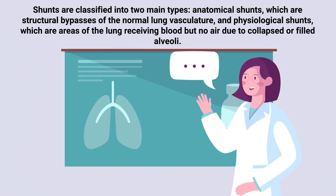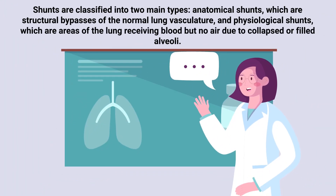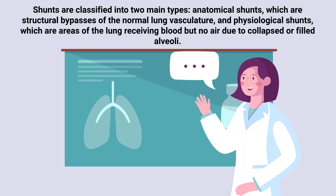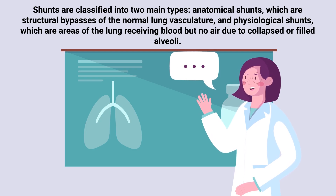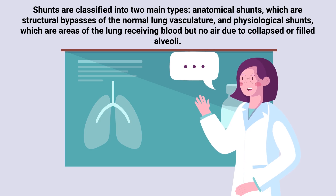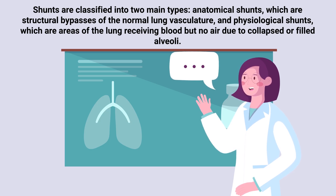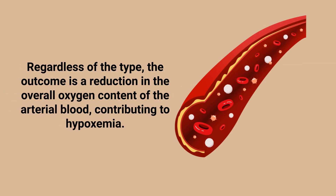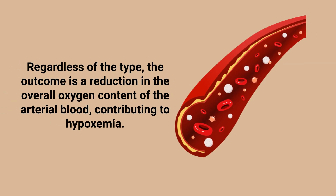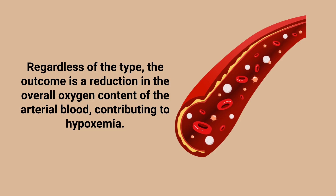Shunts are classified into two main types: anatomical shunts, which are structural bypasses of the normal lung vasculature, and physiological shunts, which are areas of the lung receiving blood but no air due to collapsed or filled alveoli. Regardless of the type, the outcome is a reduction in the overall oxygen content of the arterial blood, contributing to hypoxemia.